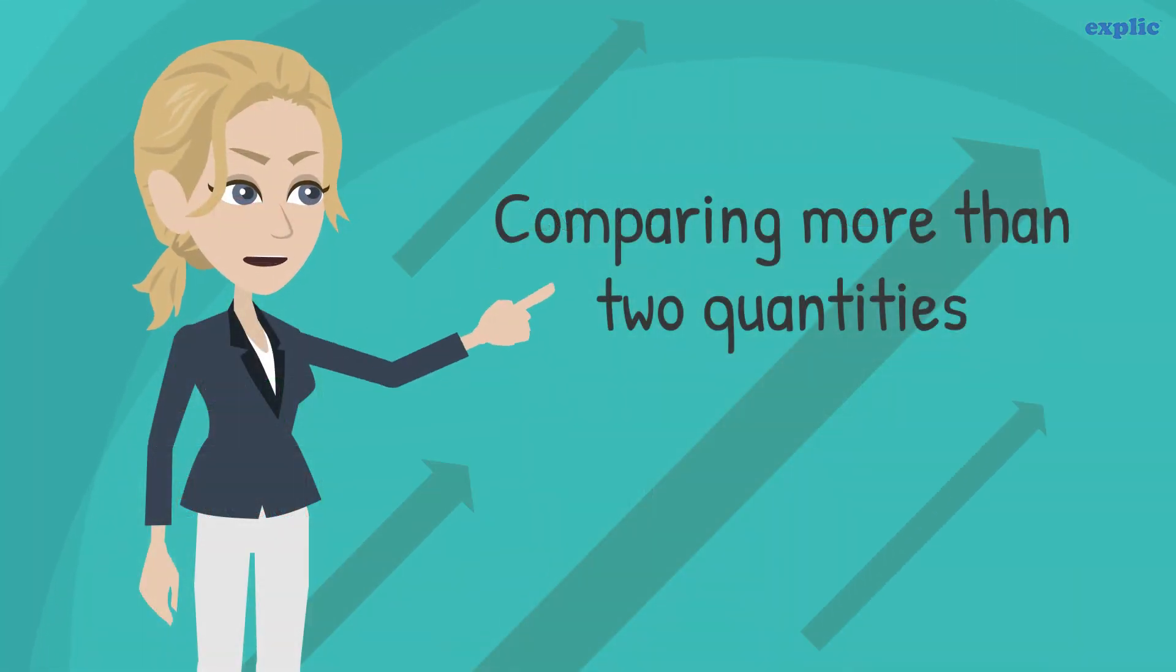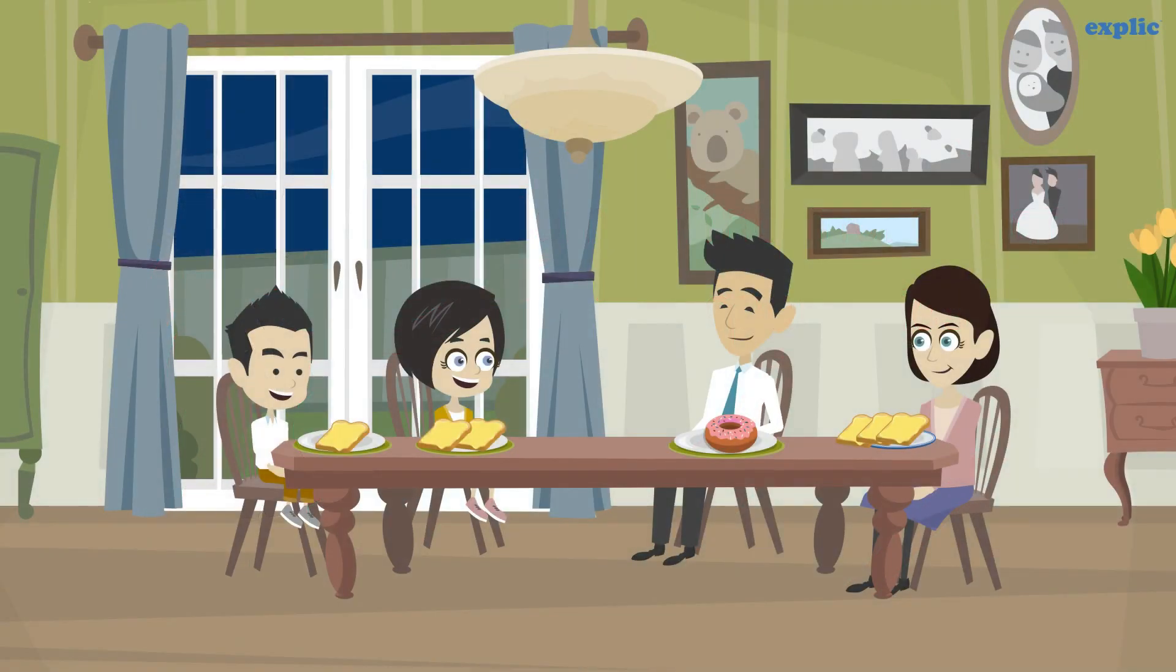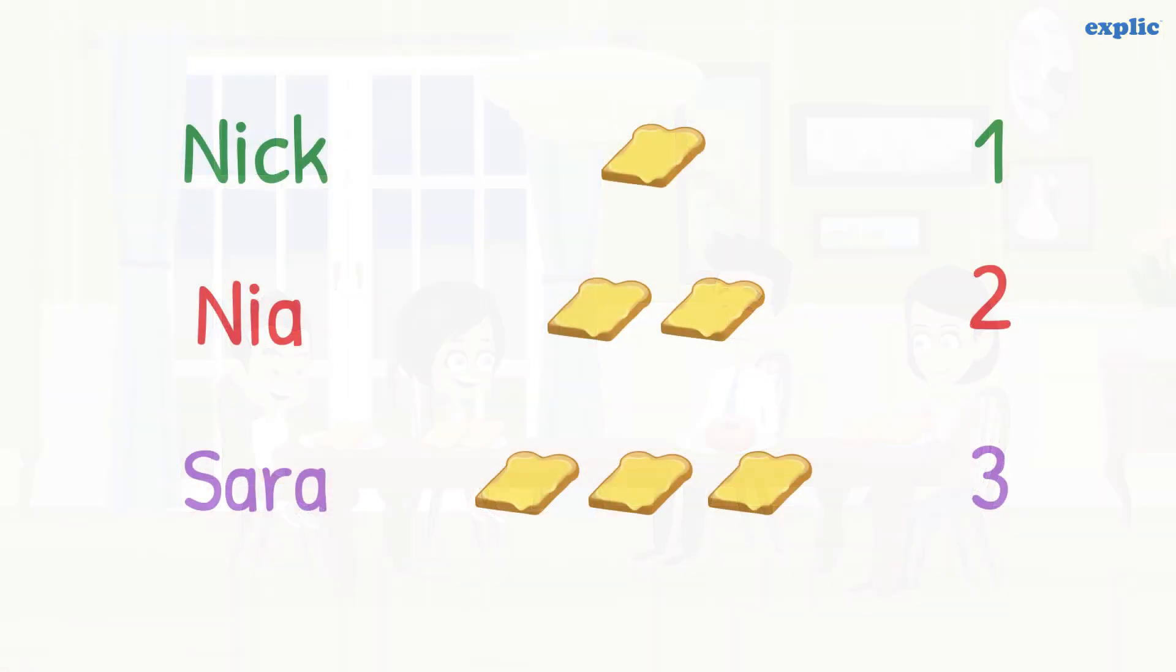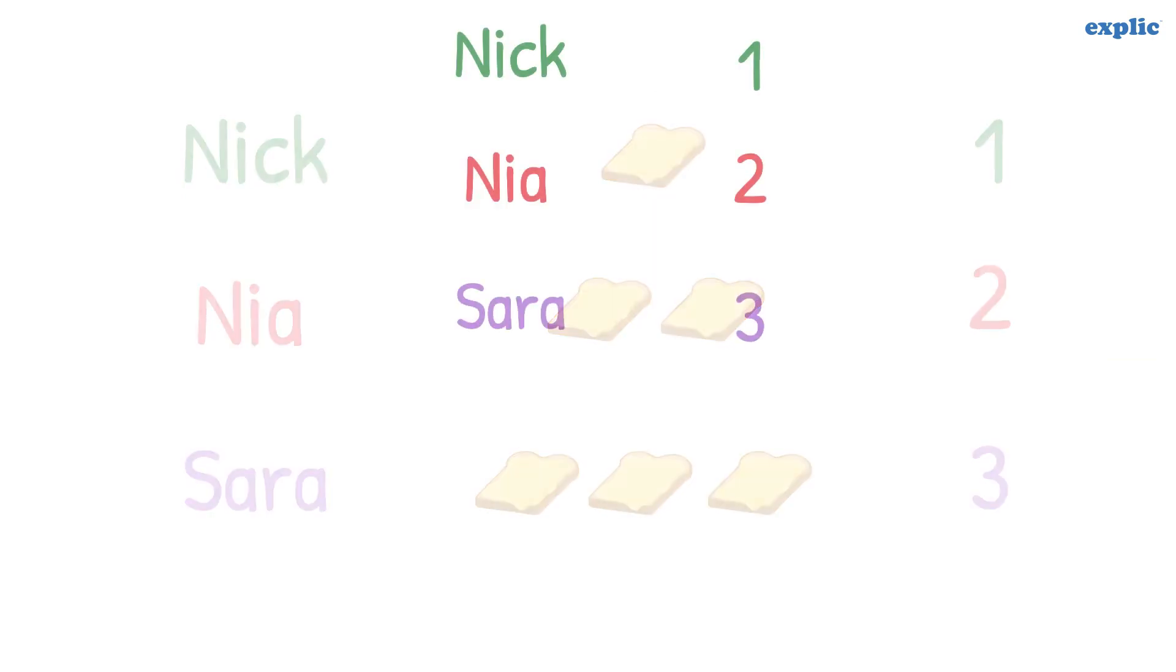Let's compare more than two quantities using ratio. Let's revisit our first example. Suppose Nia's mother Sarah got 3 slices of bread. What is the ratio of number of slices of bread Nick, Nia, and her mother got? The ratio of more than two quantities can be shown simply using colons.